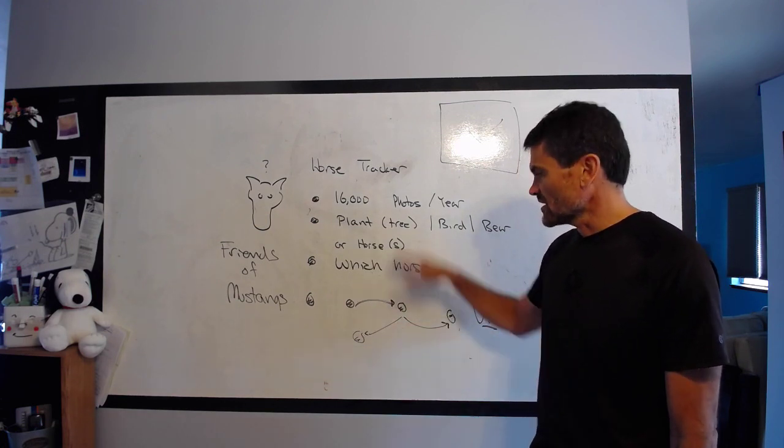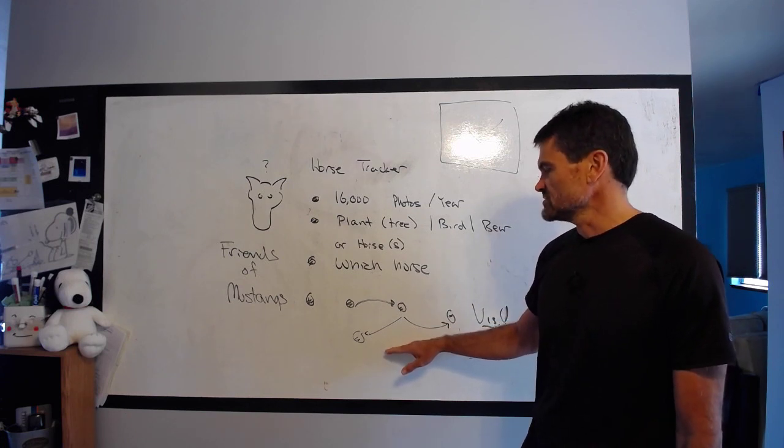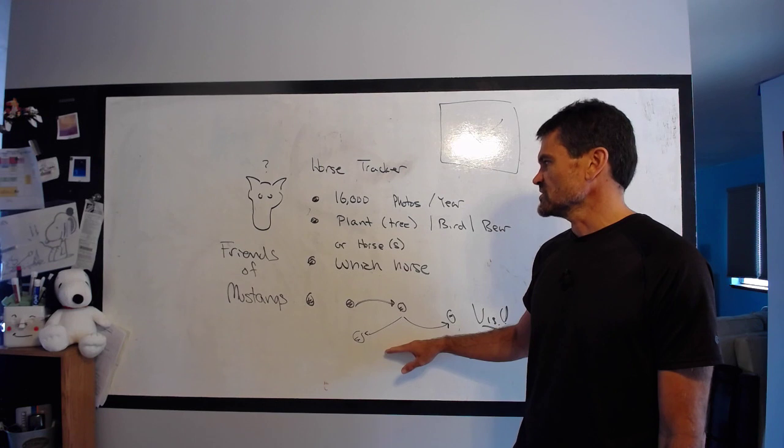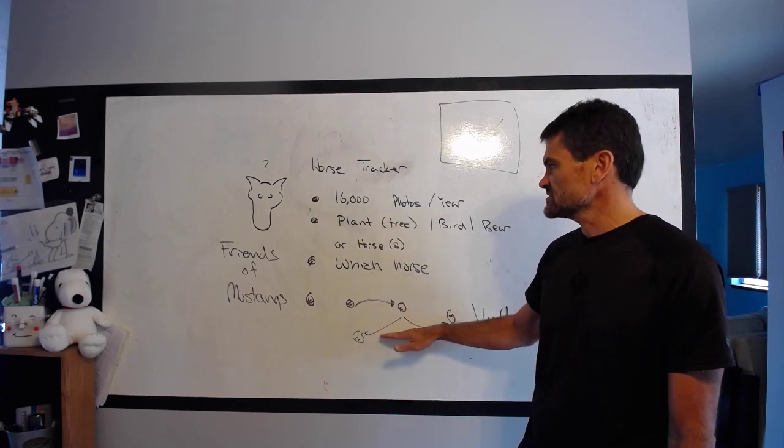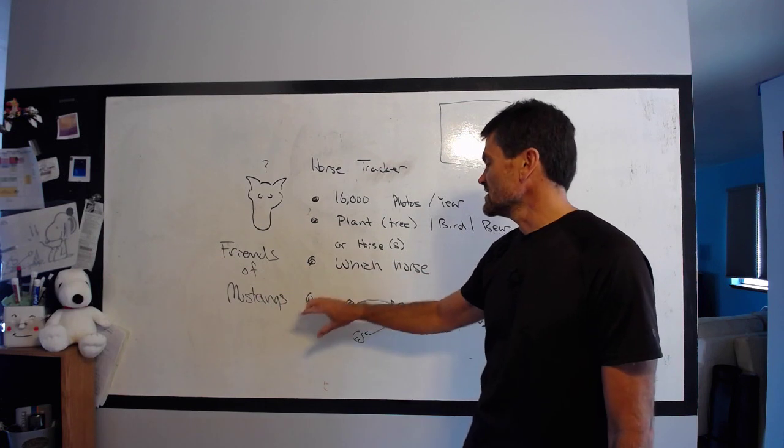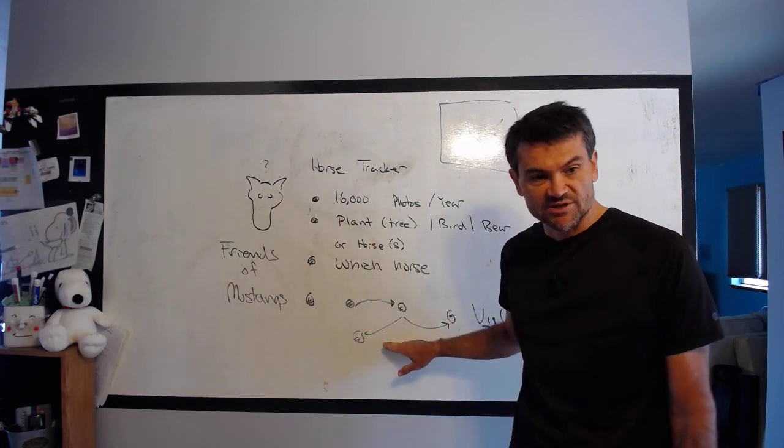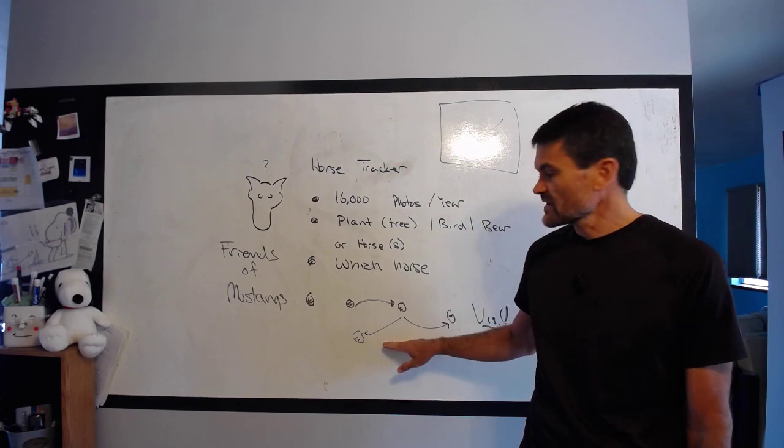So not all of this has to be done in one step, and there are pieces that would be useful independent of the previous steps. But the basic idea would be to work with the Friends of the Mustangs group to build such a tracking app and simplify this part of the process that they work with. Thank you very much.